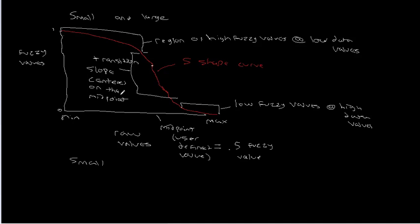And so, just like with the near function, small and large have two parameters. We already talked about one, which is this midpoint, which specifically defines what data value is going to be in the middle of this transition and have a fuzzy value of 0.5. And the other is going to be what's called spread.